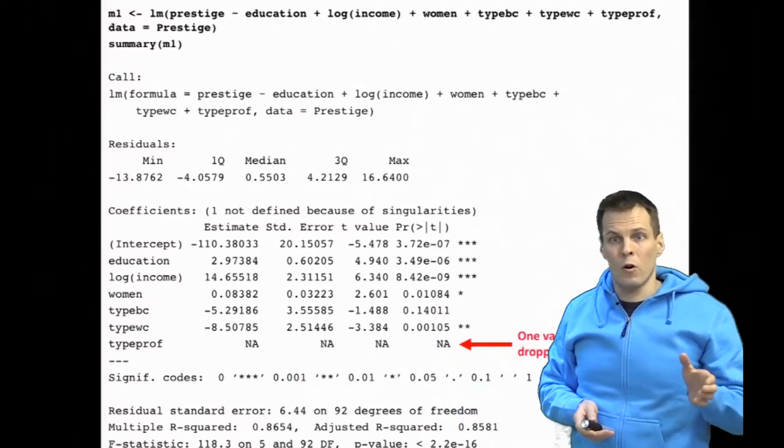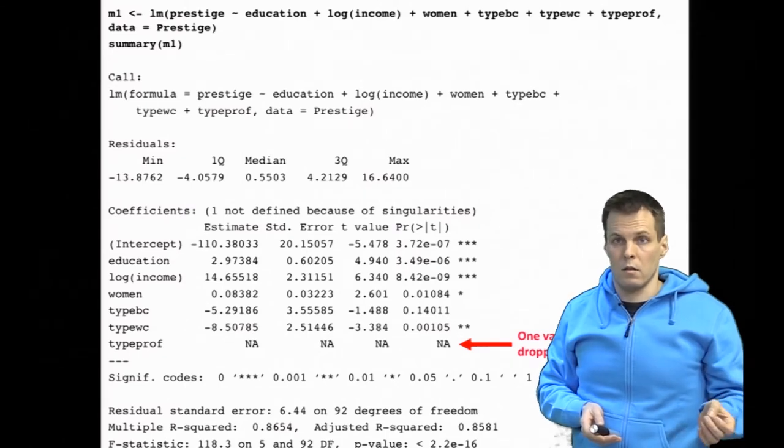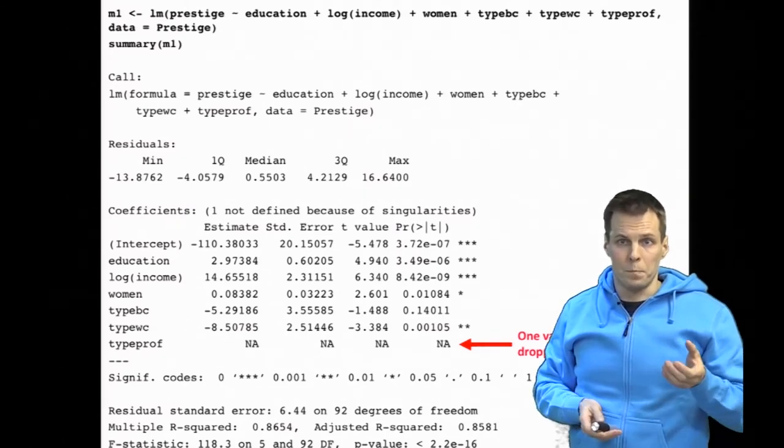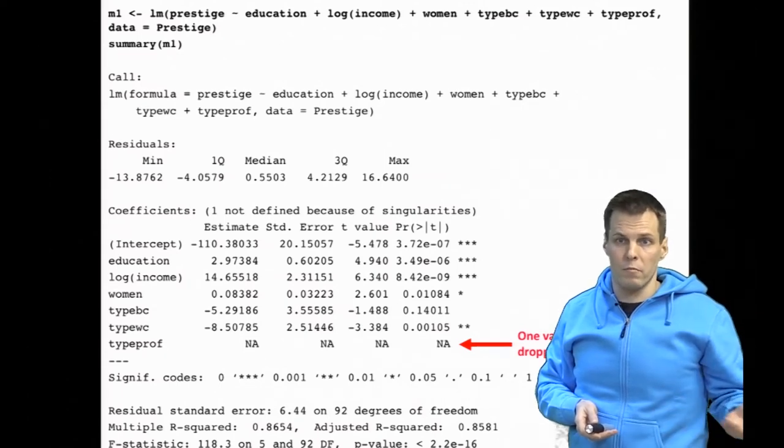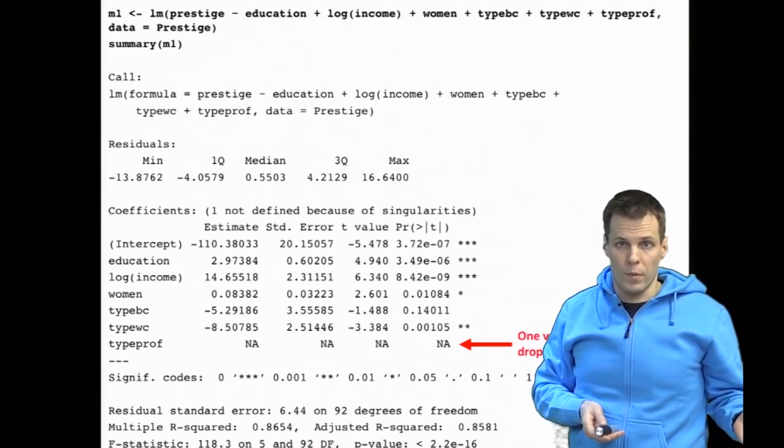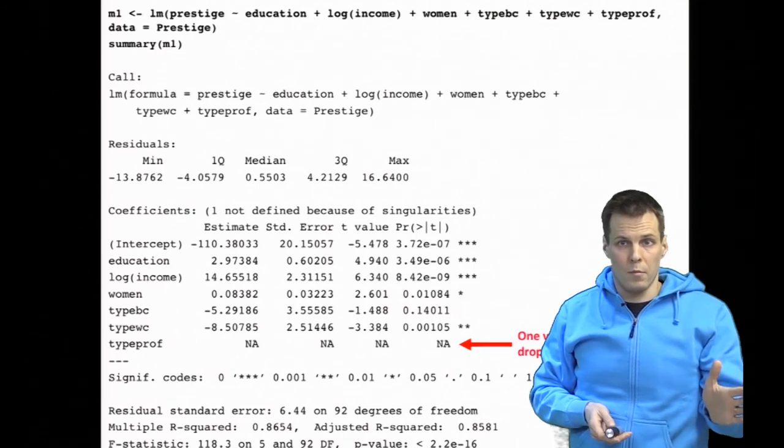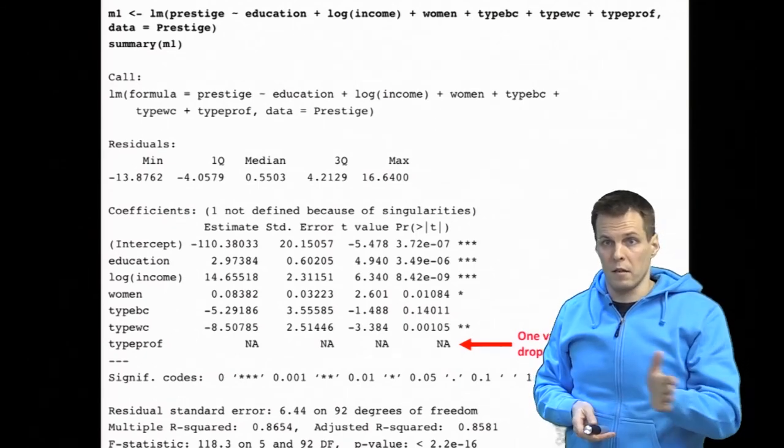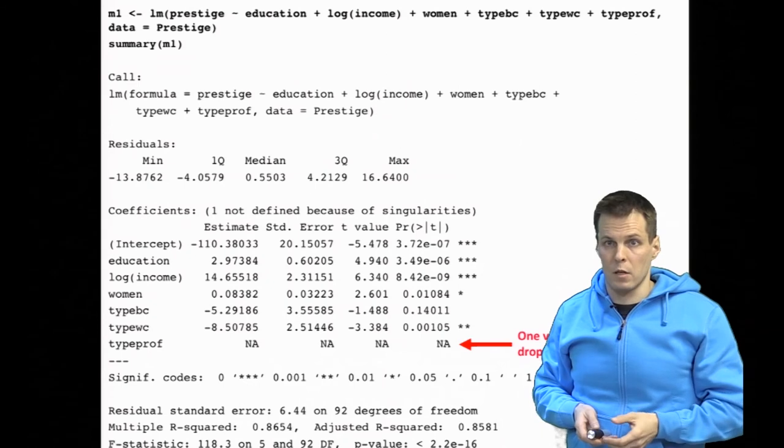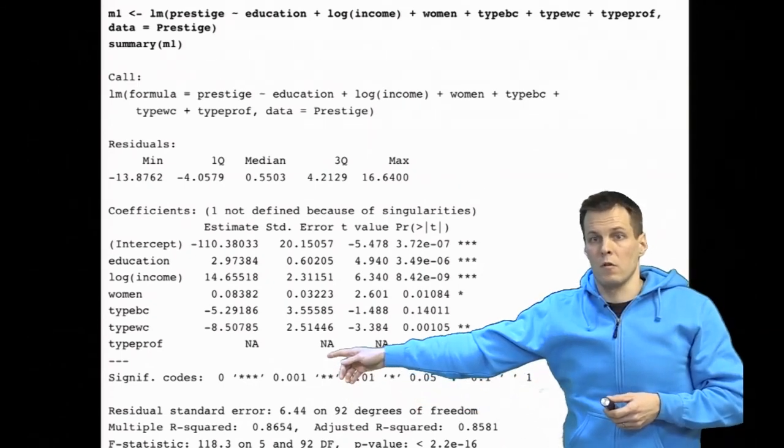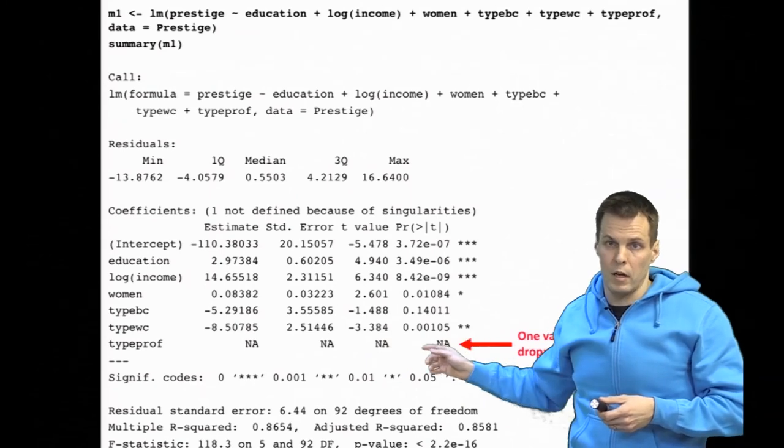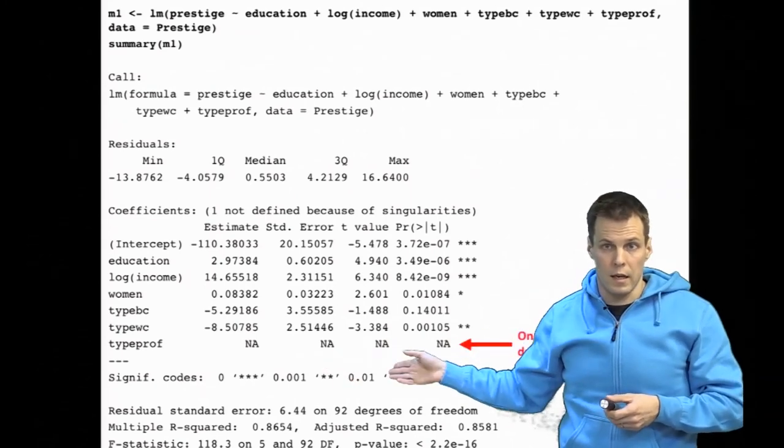Or it could also be an indication that you have done a data coding mistake or data preparation mistake, accidentally copied, for example, one variable to your data set twice under different names. So that can happen as well. When you encounter these no estimates or NAs or periods depending on the statistical software, it indicates a data problem.